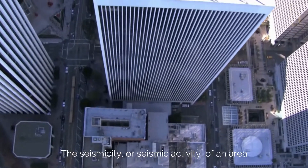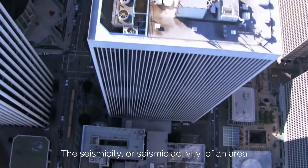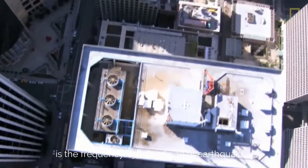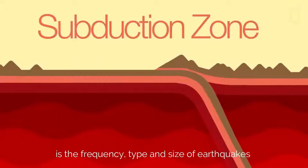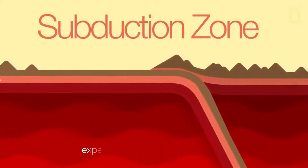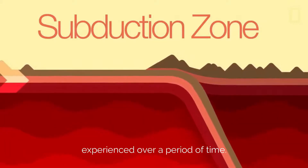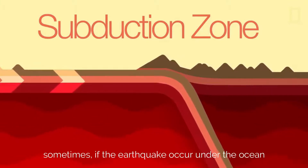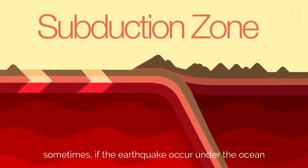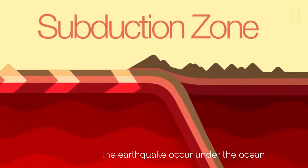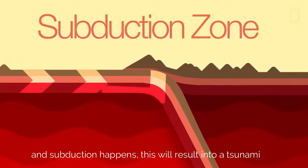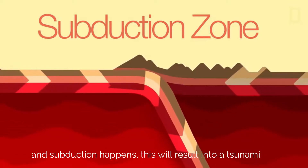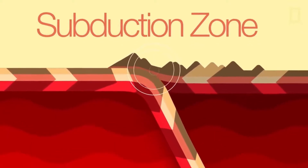The seismicity or seismic activity of an area is the frequency, type, and size of earthquakes experienced over a period of time. Sometimes, if the earthquake occurs under the ocean and subduction happens, this will result in a tsunami.